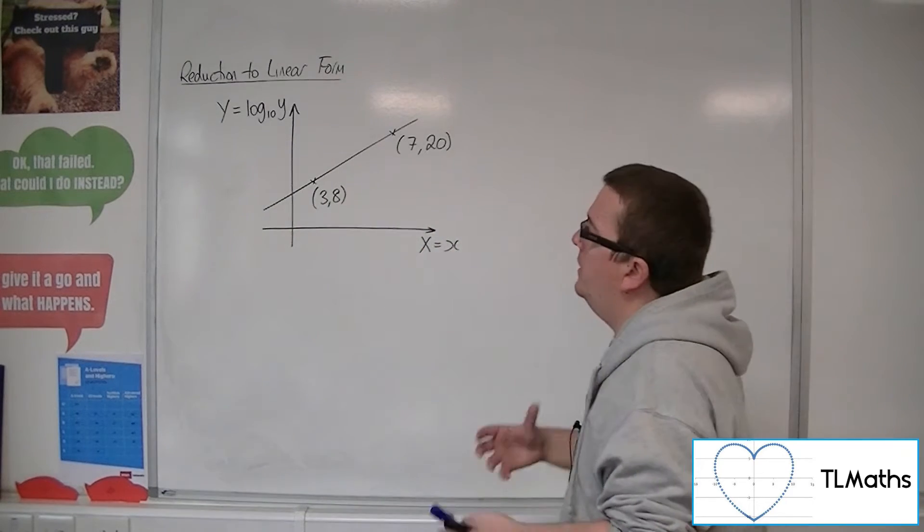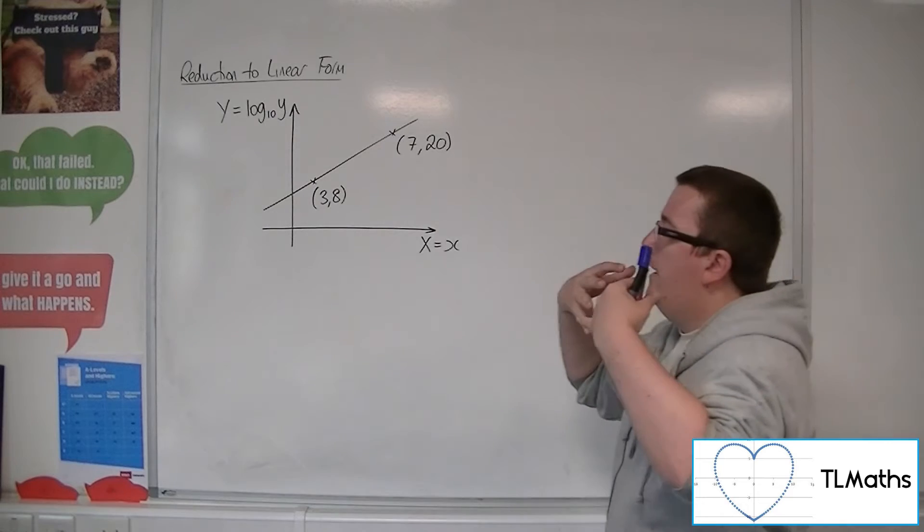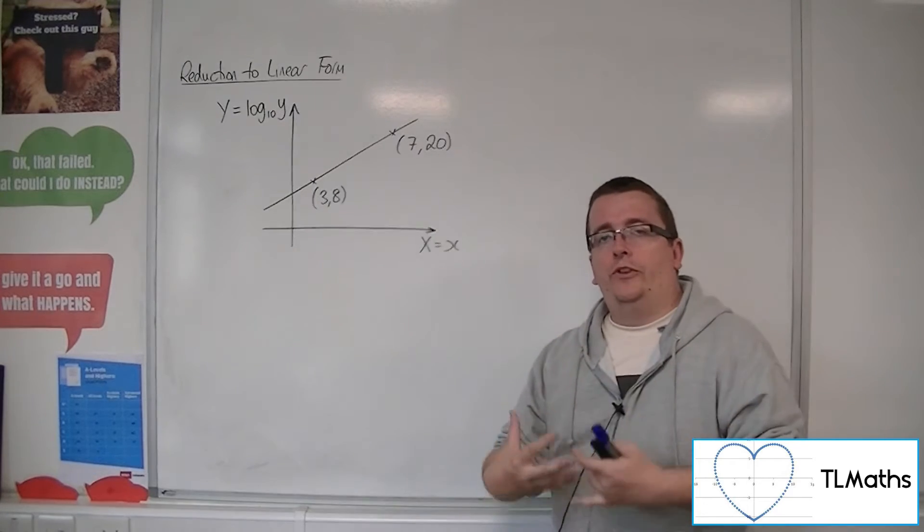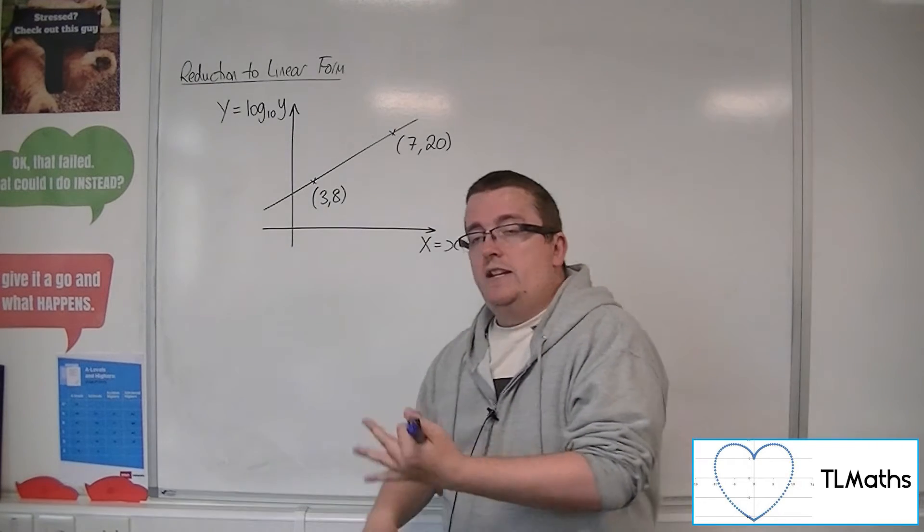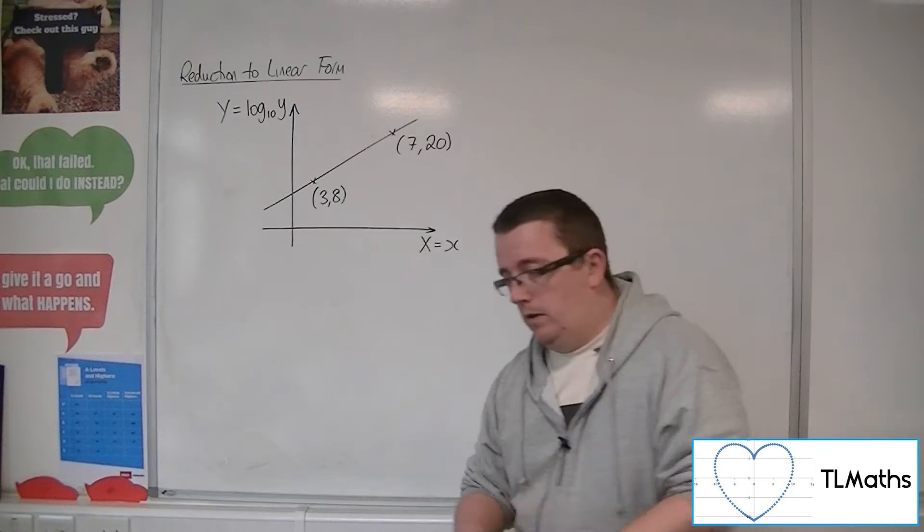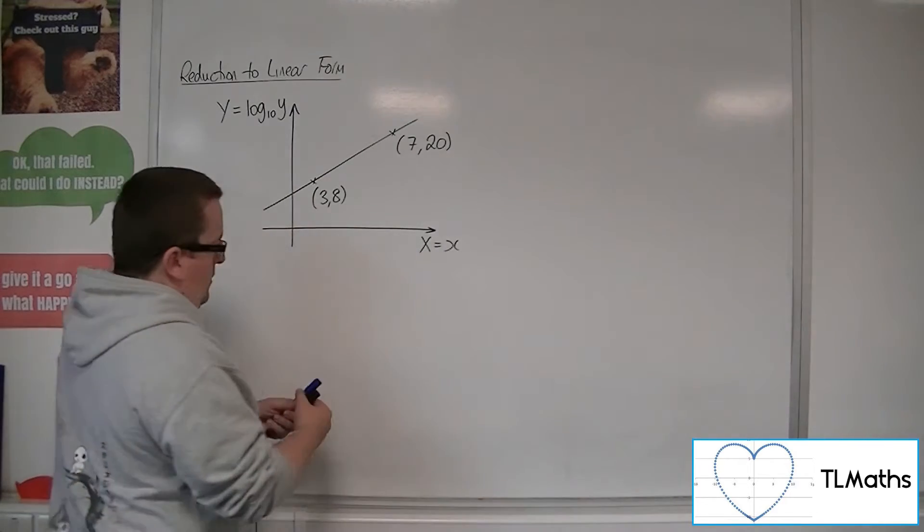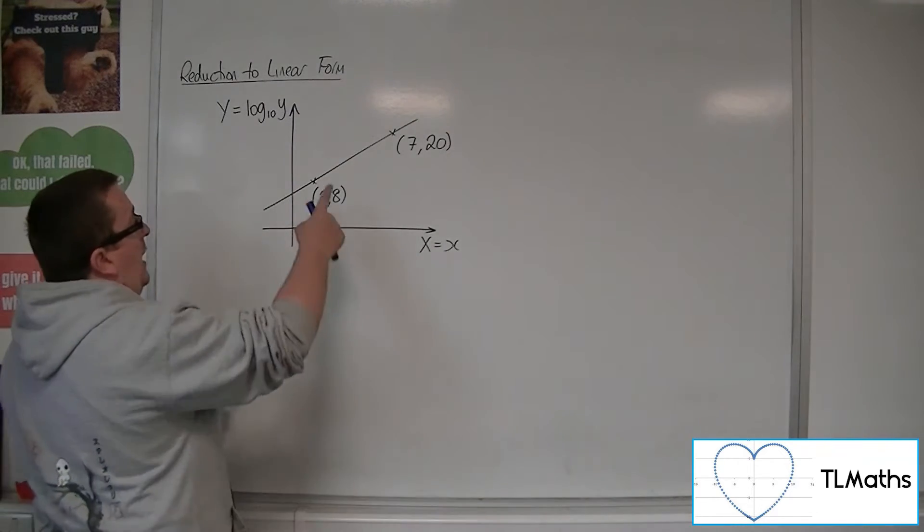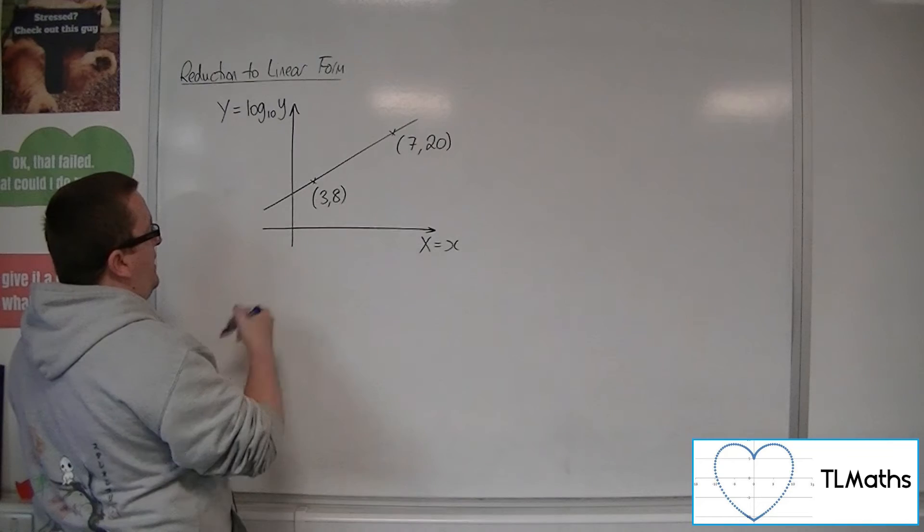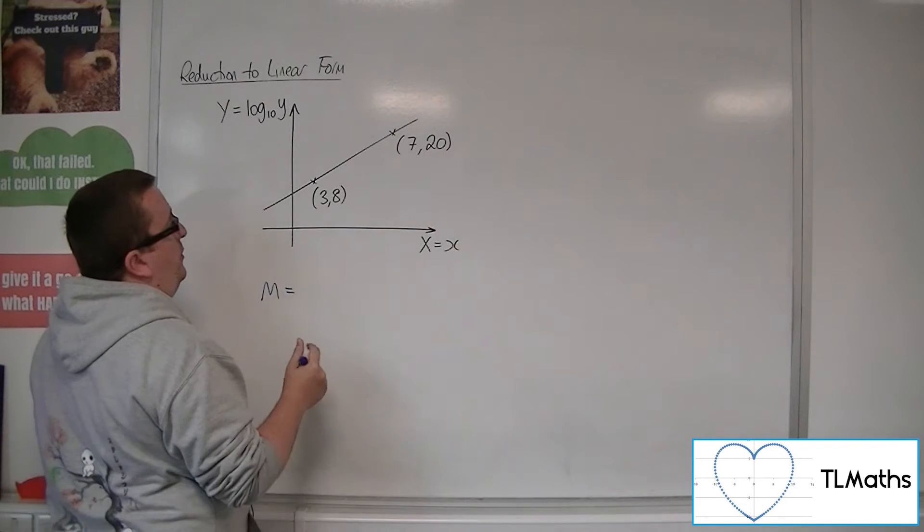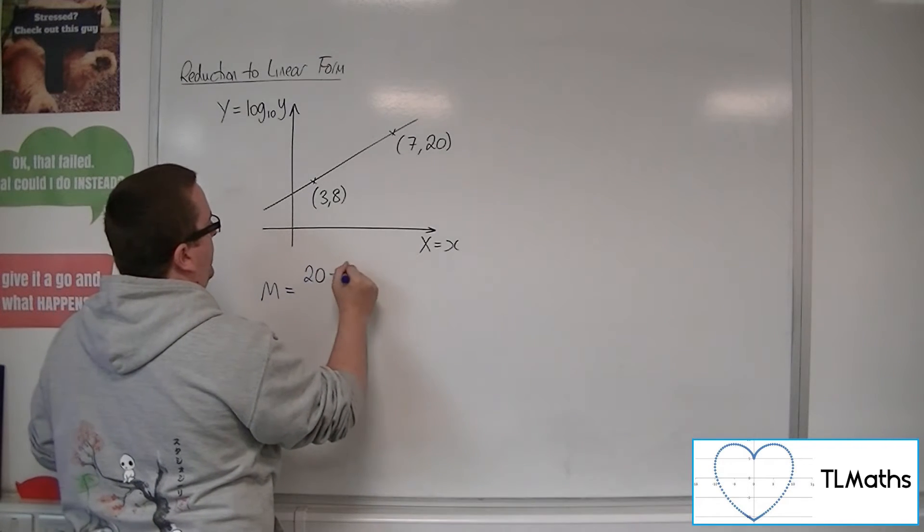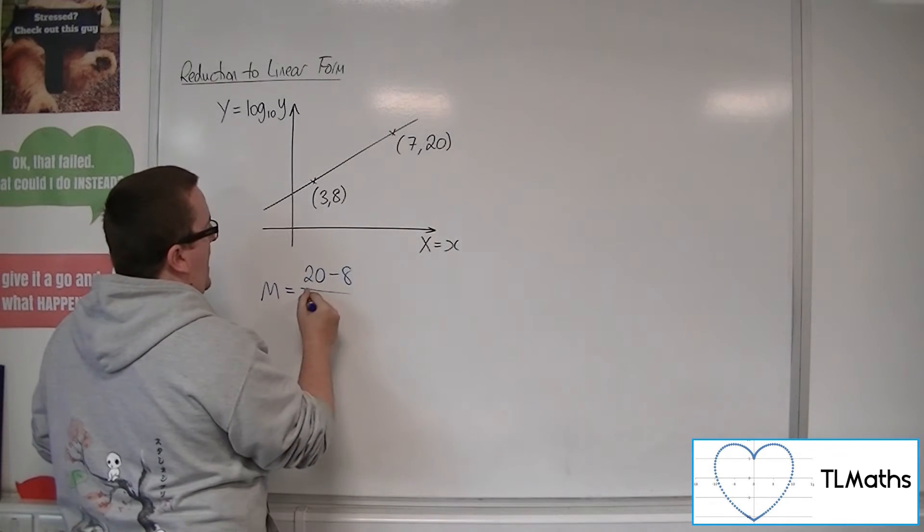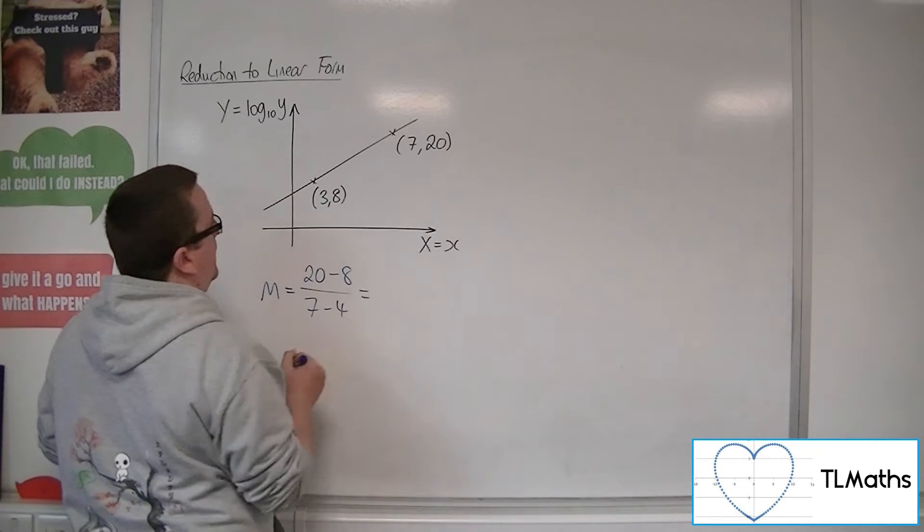So what I can do is I can figure out what the gradient and the y-intercept would be. So first thing I'd do is work out the gradient. So m is equal to the difference in the y-coordinates divided by the difference in the x-coordinates.